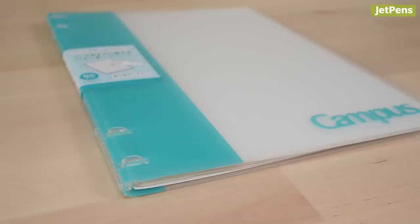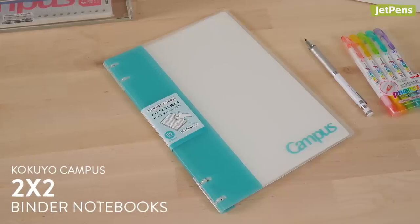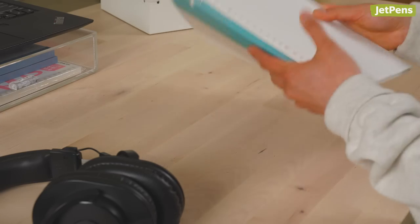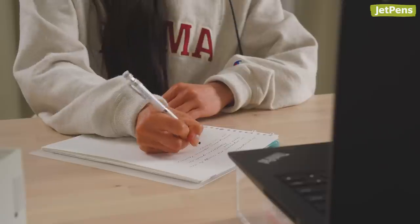For a slimmer format, check out Kokuyo Campus 2x2 Binder Notebooks. They're great for meetings and classes, and their flexible covers can fold back to occupy less space.